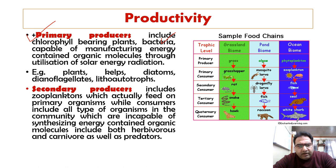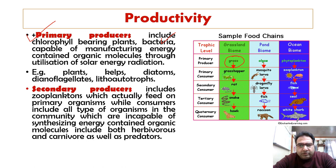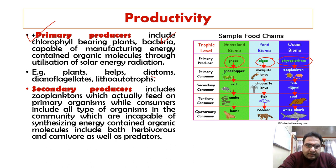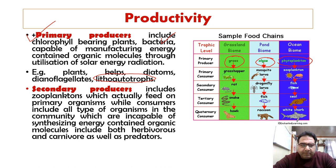Primary producers include chlorophyll-bearing plants and bacteria capable of manufacturing energy-containing organic molecules through utilization of solar energy. They differ across ecosystems: in grassland ecosystems, grasses are the primary producers; in pond biomes, algae are the primary producers; in oceans, phytoplankton are the primary producers. They can be kelps, diatoms, dinoflagellates, and sometimes lithotrophs such as sulfur-decomposing bacteria or iron-decomposing bacteria, which utilize different substrates.